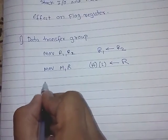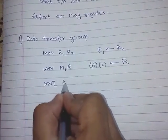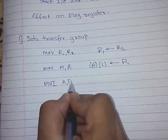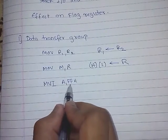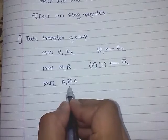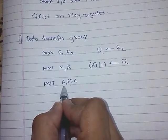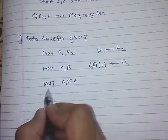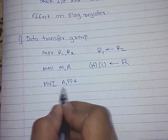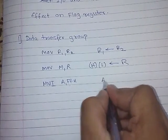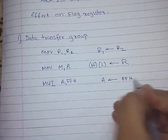Next: MVI A, FFH. After the execution of this instruction, the immediate data FFH will go into the accumulator. This means MVI loads the immediate data FFH into the accumulator. So now the accumulator will have the data FFH.